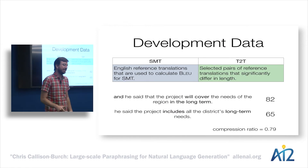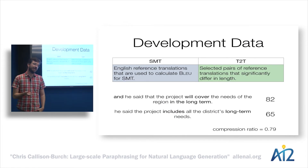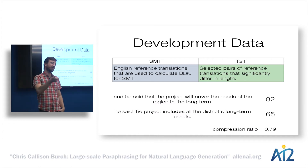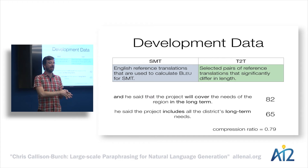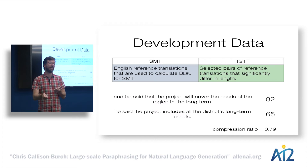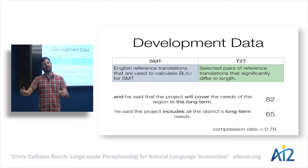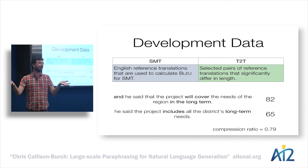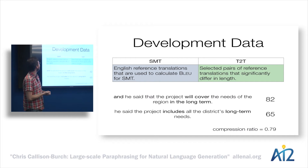In statistical machine translation, we normally use development data where we hire multiple translation agencies to translate the same set of foreign documents and use that to compute a BLEU score. We hire multiple agencies because there's not one exact correct translation — unlike speech recognition, which has a single authoritative transcription. In translation there's a lot of allowable variation, so each agency does it slightly differently and we capture some of that allowable variation.